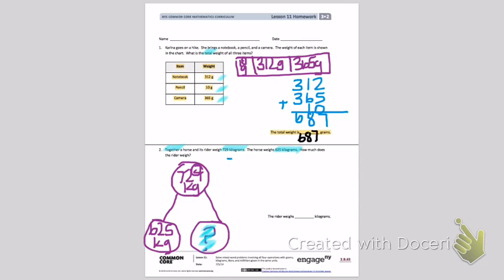So I'm going to do 729 minus 625. 9 take away 5 is 4, 2 minus 2 is 0, 7 minus 6 is 1. So the rider weighs 104 kilograms.